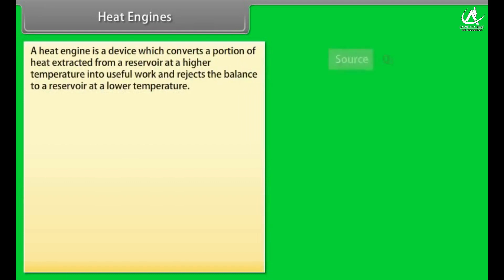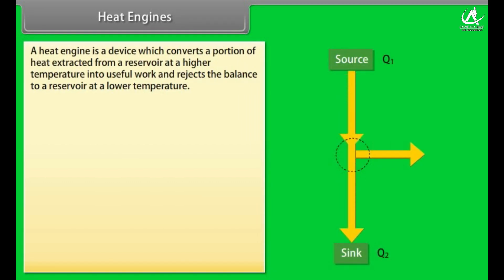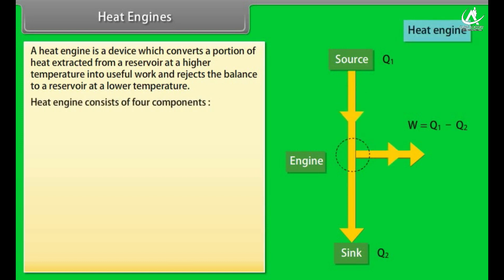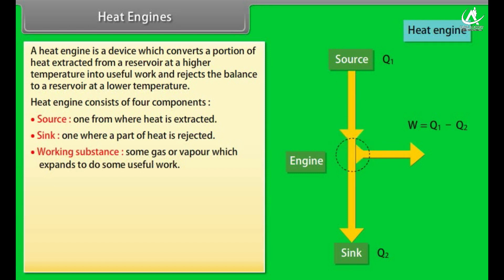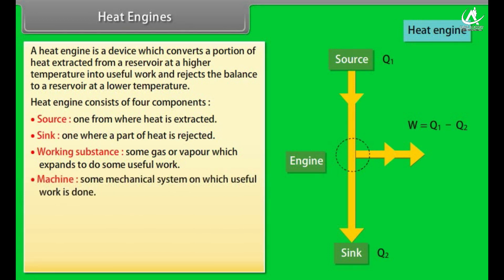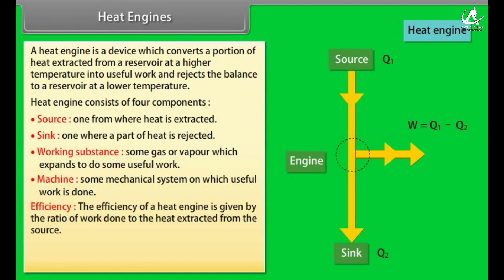A heat engine is a device that converts a portion of heat extracted from a reservoir at high temperature into useful work and rejects the balance to a reservoir at lower temperature. It consists of four components: a source (where heat is extracted), a sink (where heat is rejected), a working substance (gas or vapor that expands to do work), and a machine (on which useful work is done). The efficiency of a heat engine equals 1 − Q₂/Q₁.